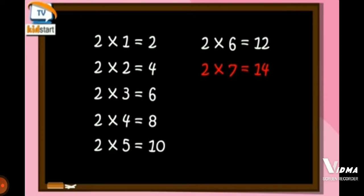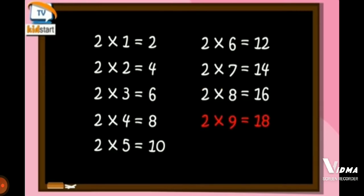Two sevens are fourteen. Two eights are sixteen. Two nines are eighteen. Two tens are twenty.